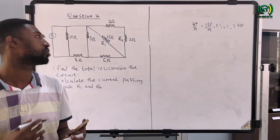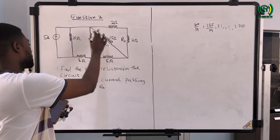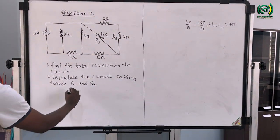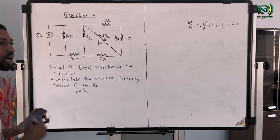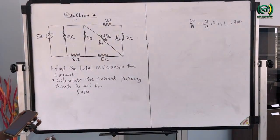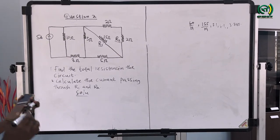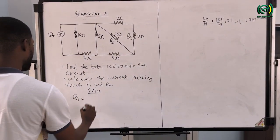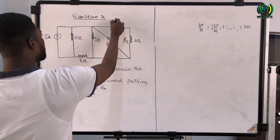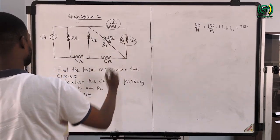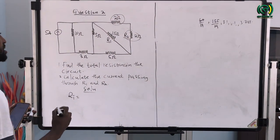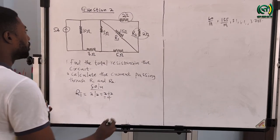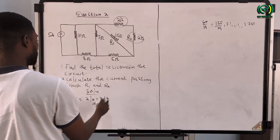For question two, we are supposed to calculate the total resistance in the circuit, then calculate the current passing through resistors R1 and R2. This circuit has a lot of resistors connected in either parallel and in series. To calculate the total resistance RT, we realize that this 2-ohm resistor is connected in series with the other 2-ohm resistor. Whenever resistors are in series we just add them: 2 in series with 2 gives 2 plus 2, which equals 4 ohms.